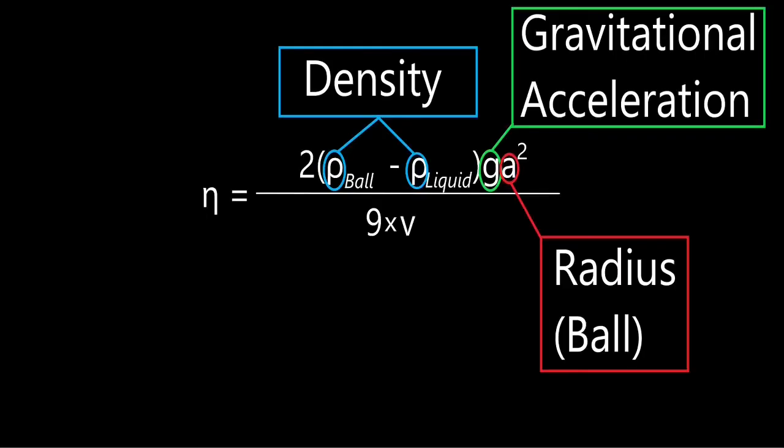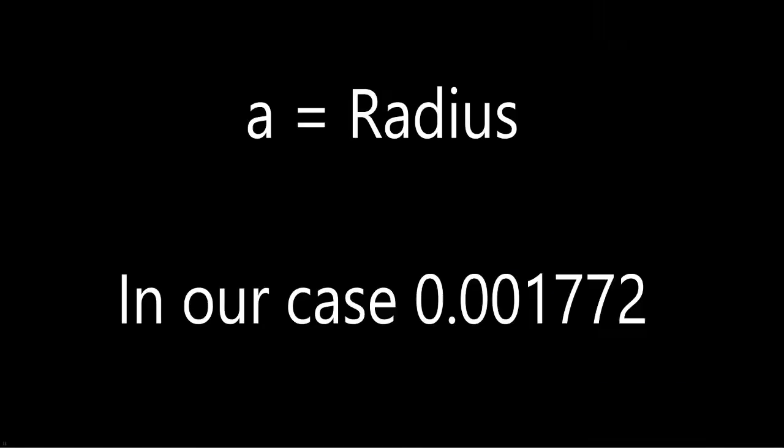Then, there's the radius of the ball to the power of 2. In our case, our ball that we dropped into the liquid has a radius of 0.001772 meters.